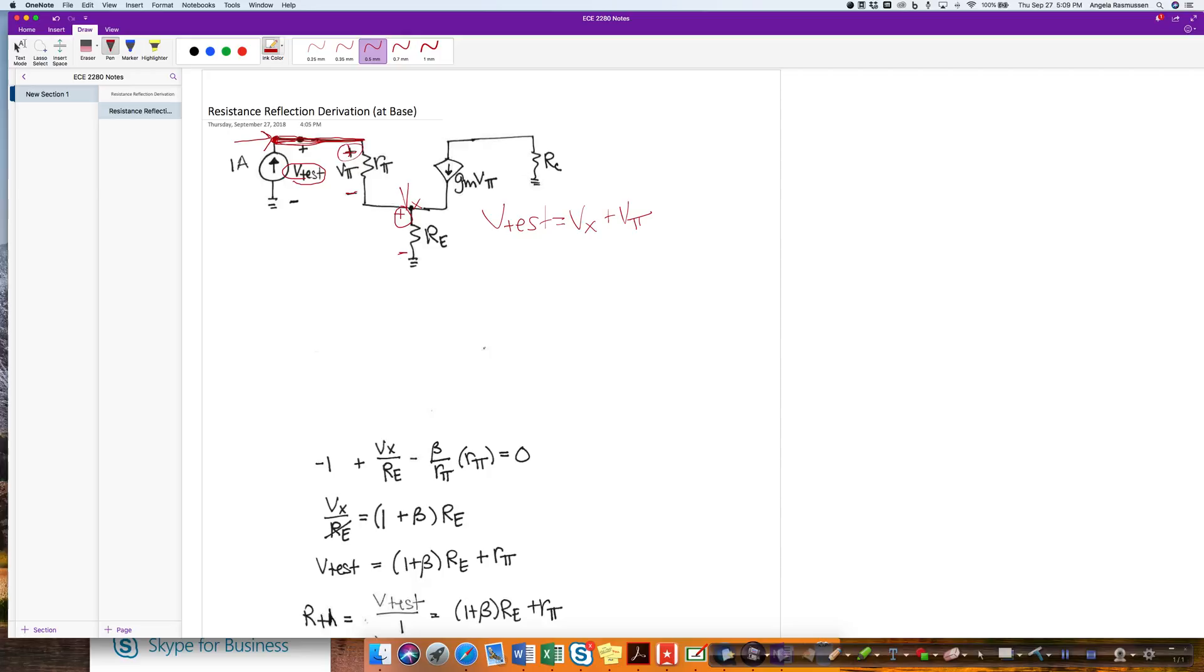I need an equation for each of these. I notice that I do know the current going through this resistor. Therefore, Vpi is just the 1 amp times Rpi.